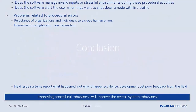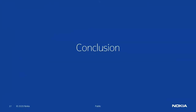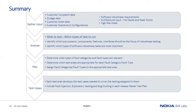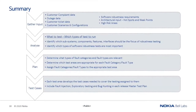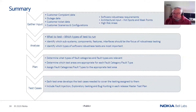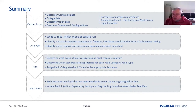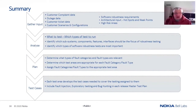In conclusion, to build your own software robustness test plan: start with analysis of customer complaints, outage data, customer tickets, and configurations. Think about what could go wrong — architectural hotspots and weak points, the high-risk areas. From that, identify which areas are best suited to fault injection, exploratory testing, or bug hunting. Then build your test cases, exploratory testing sessions, and bug hunting sessions, and go find those software robustness bugs before they escape to customers.